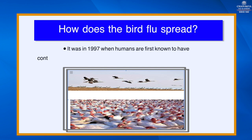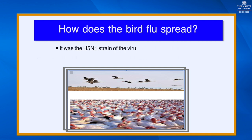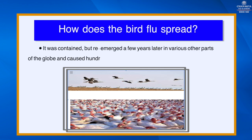The first known human contraction of bird flu was in 1997, following an outbreak in a live bird market in Hong Kong. It was the H5N1 strain of the virus, and 6 out of 18 infected humans died of the disease. It was contained but re-emerged a few years later in various other parts of the globe.